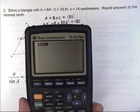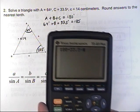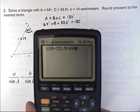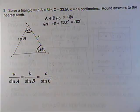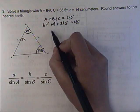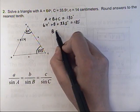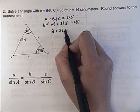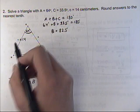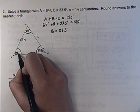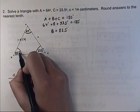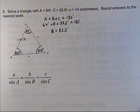So if I add those together and subtract them from 180 — 180 minus 33.5 minus 64 — I get 82.5. So angle B would have to be exactly 82.5 degrees. I like to label everything, so there we go: 82.5.